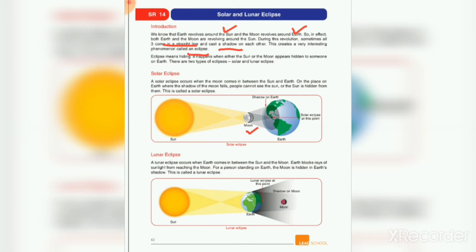Eclipse means hiding. It happens when either the sun or the moon appears hidden to someone on Earth. There are two types of eclipse: Solar and Lunar eclipse — Surya grahan and Chandra grahan. Solar eclipse is called Solar Eclipse and Chandra grahan is called Lunar Eclipse.